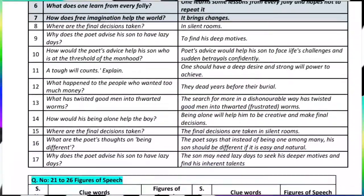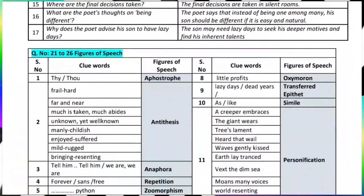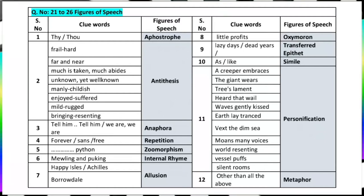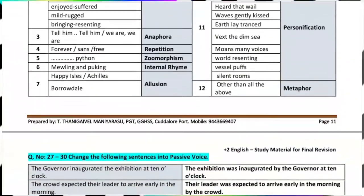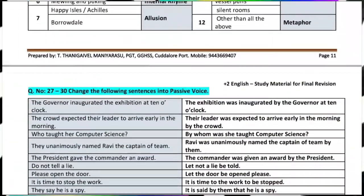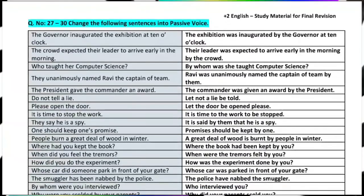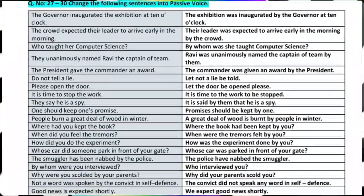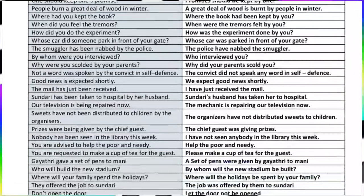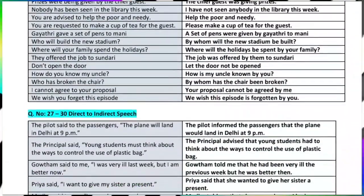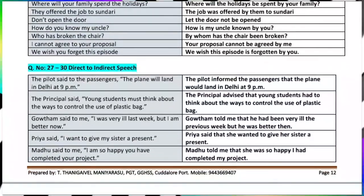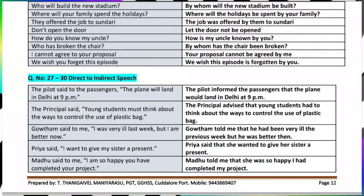Then passive voice — you can change active voice to passive voice. For example, 'Don't tell a lie' becomes 'Let not a lie be told.' For all questions, check the book back. Also, direct and indirect speech — you can change direct speech to indirect speech using the book back.